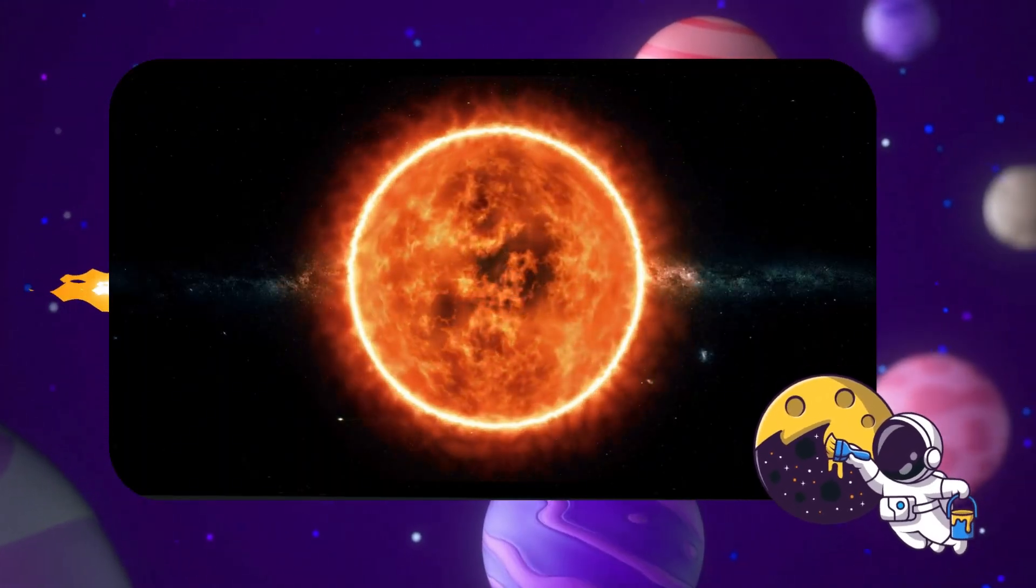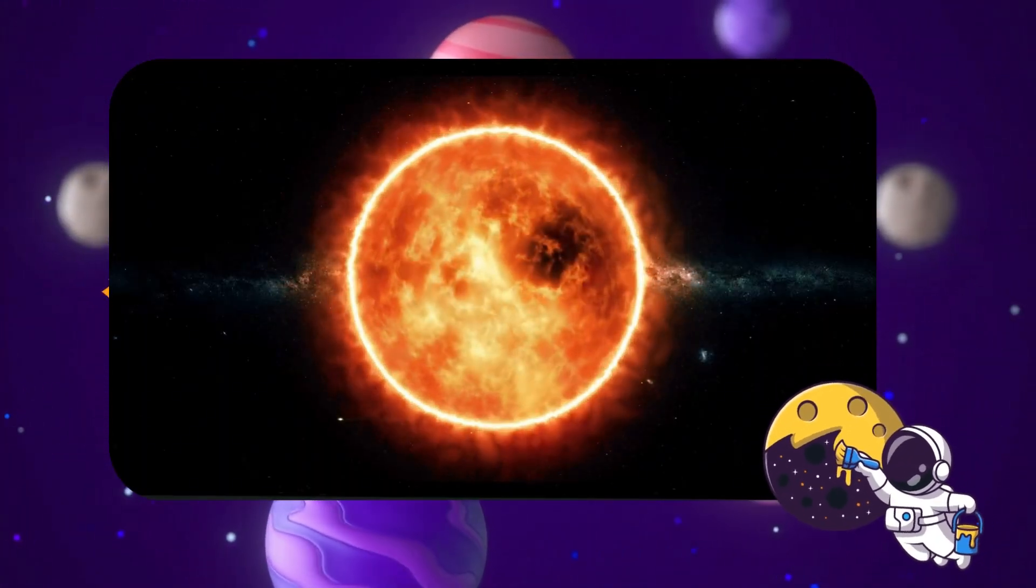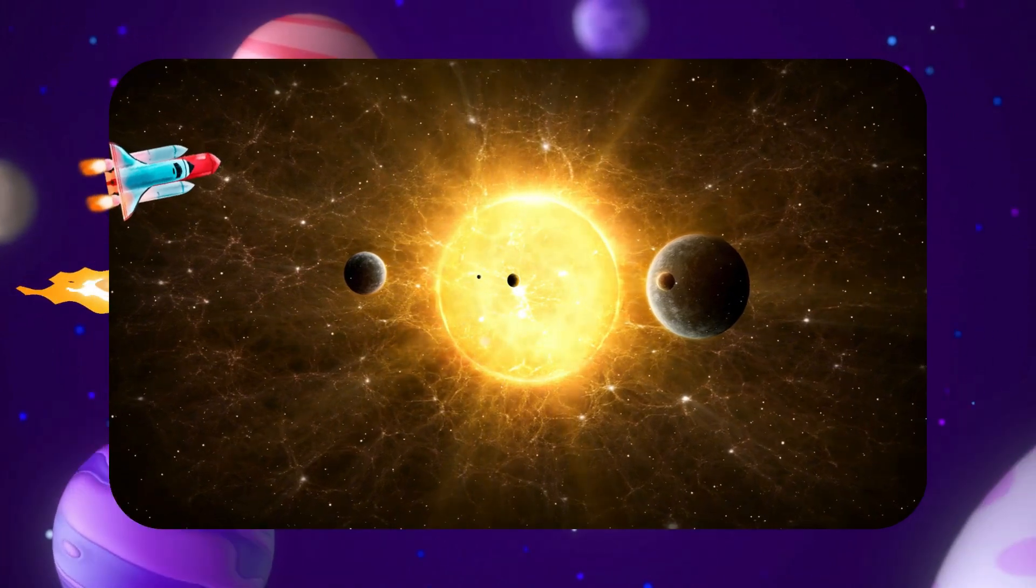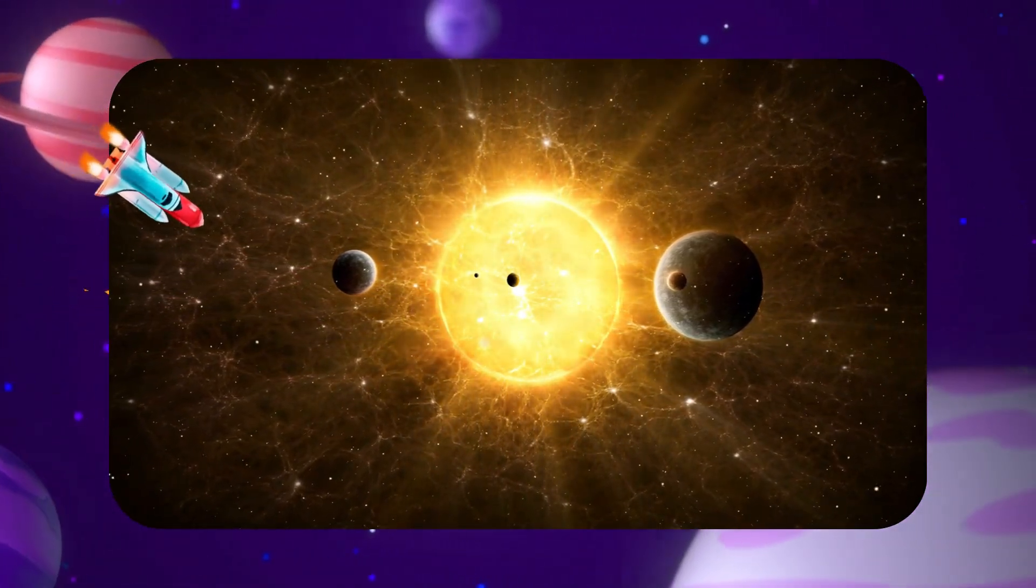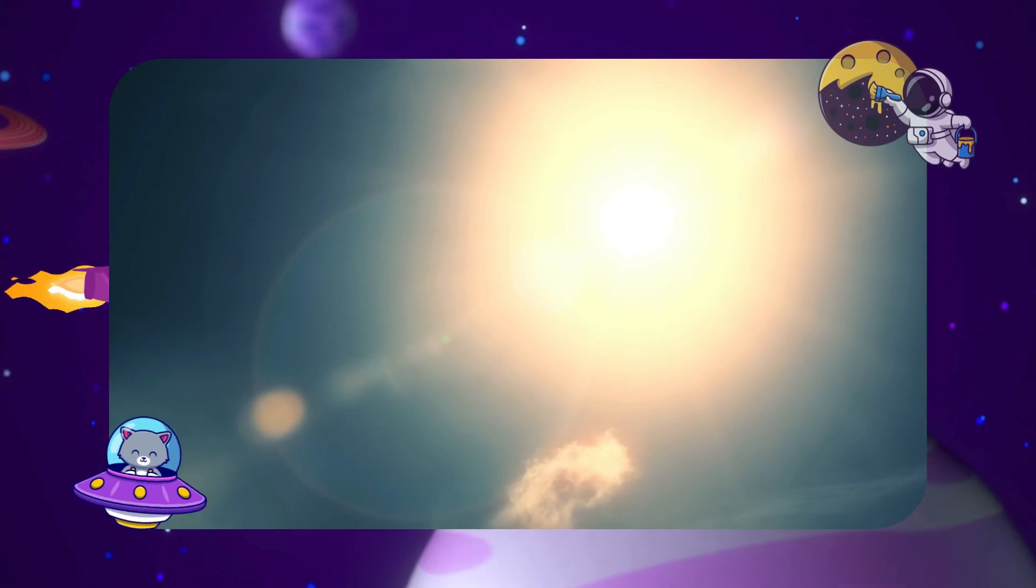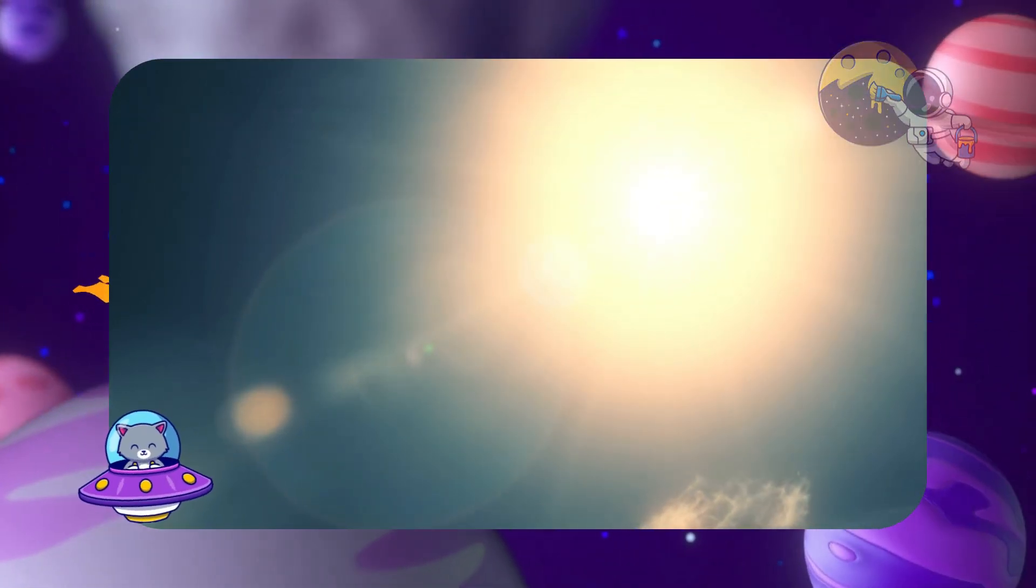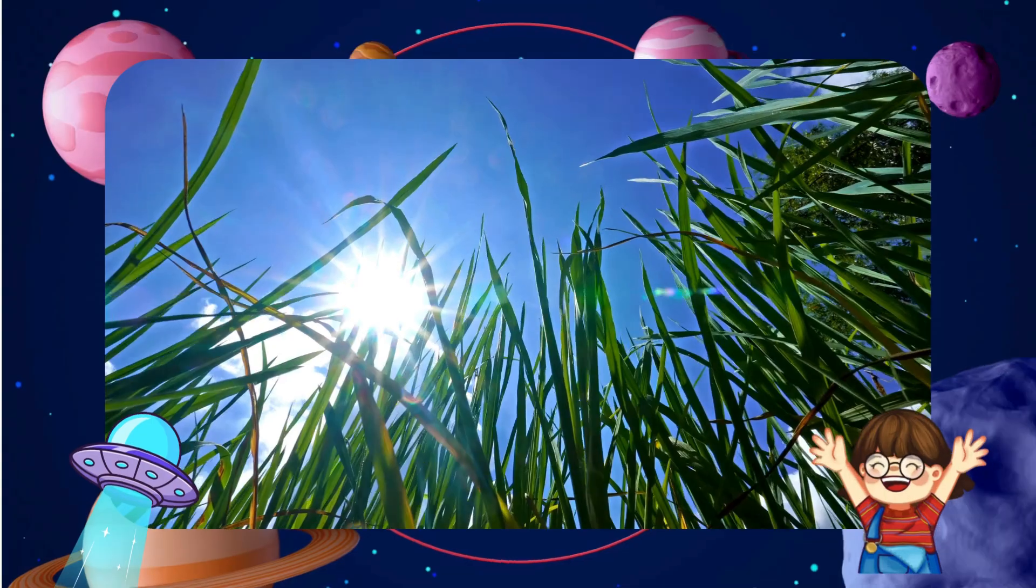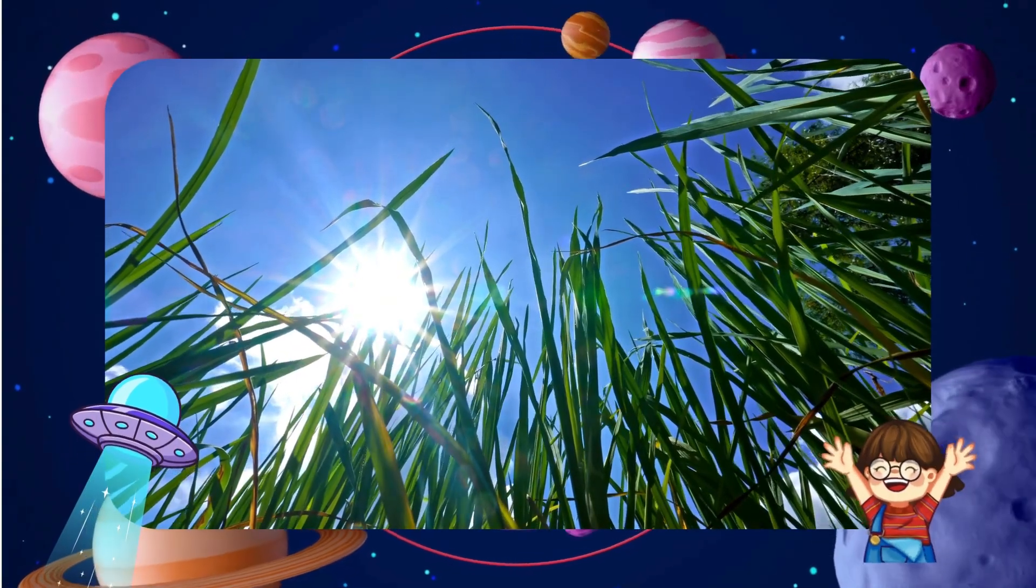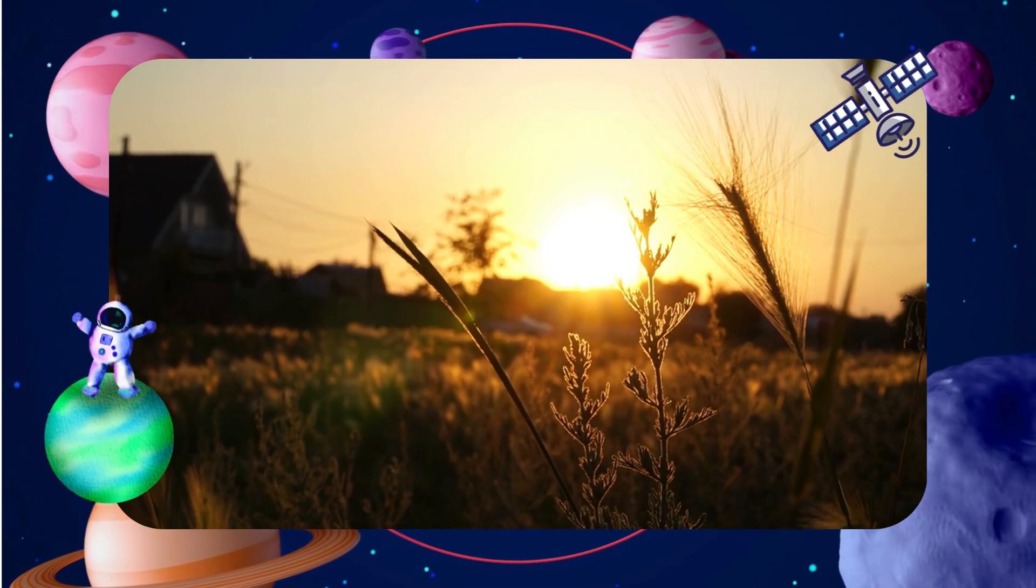The sun is a giant ball of hot gas. It's a star, not a planet, and it's right in the center of our solar system. The sun holds the planets in place with gravity. It makes all the planets go around it, just like a big space magnet. The sun gives us light to see and heat to stay warm. Without the sun, plants couldn't grow, and we couldn't live.